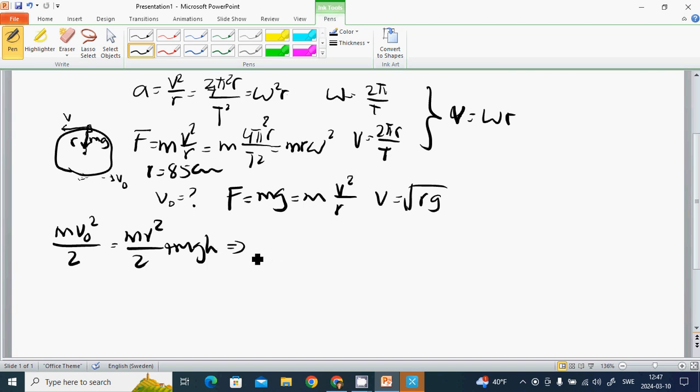We are getting V² equals V0² plus 2g times 2R. H is from here to the top. Then V equals square root of rg, so V0 equals square root of 5rg.